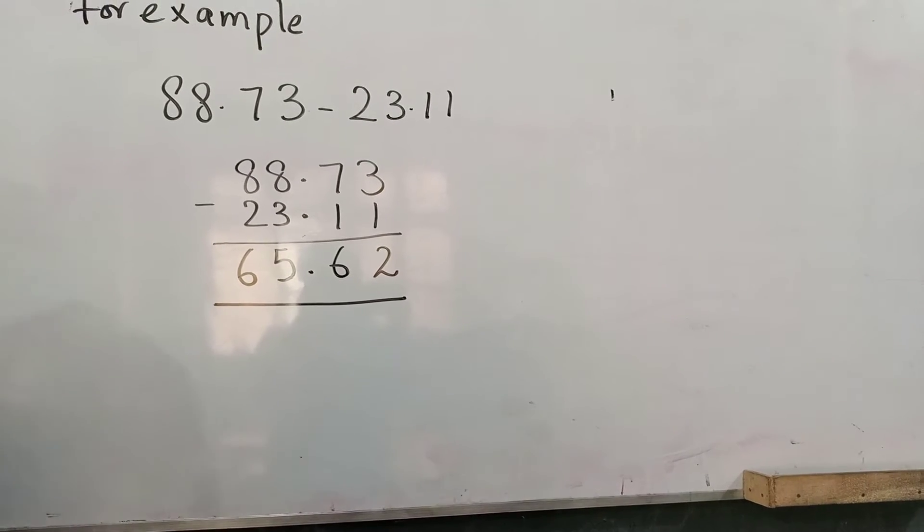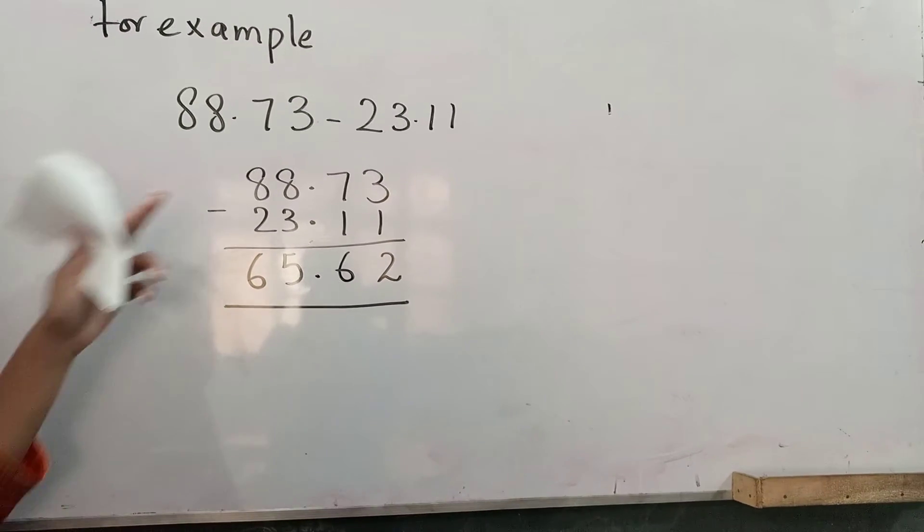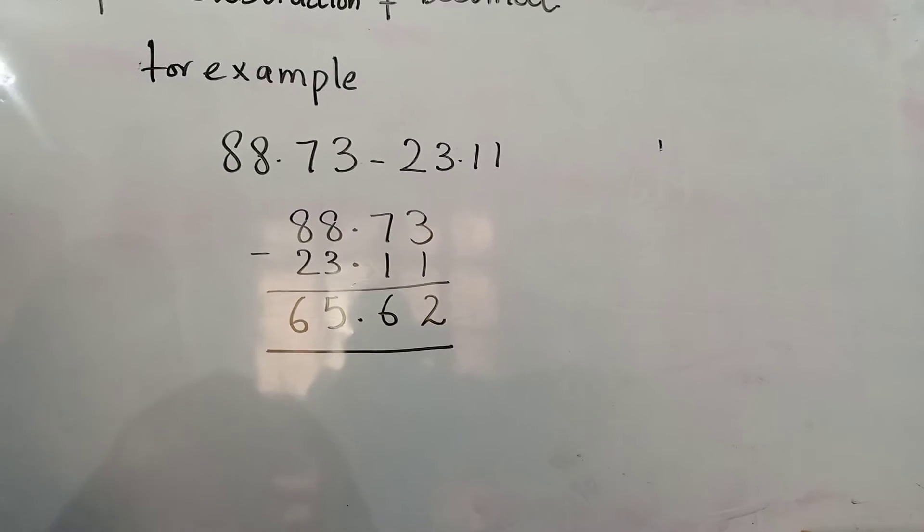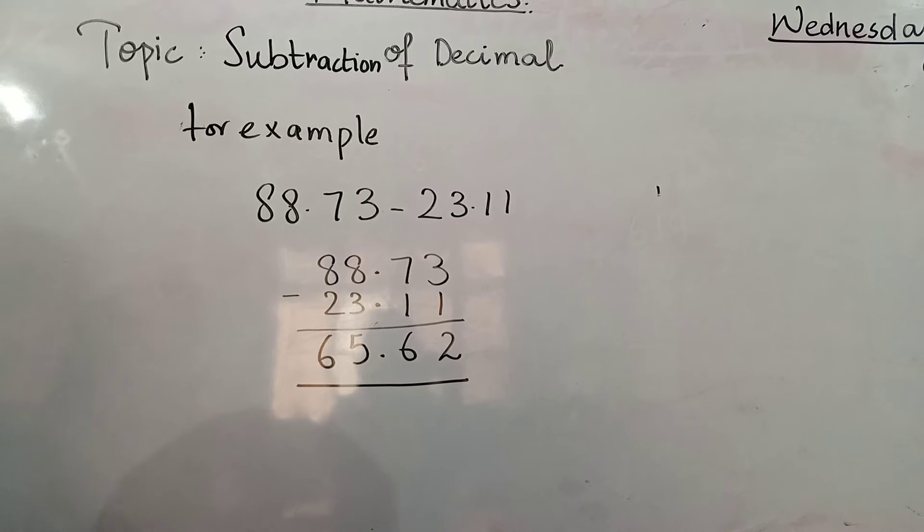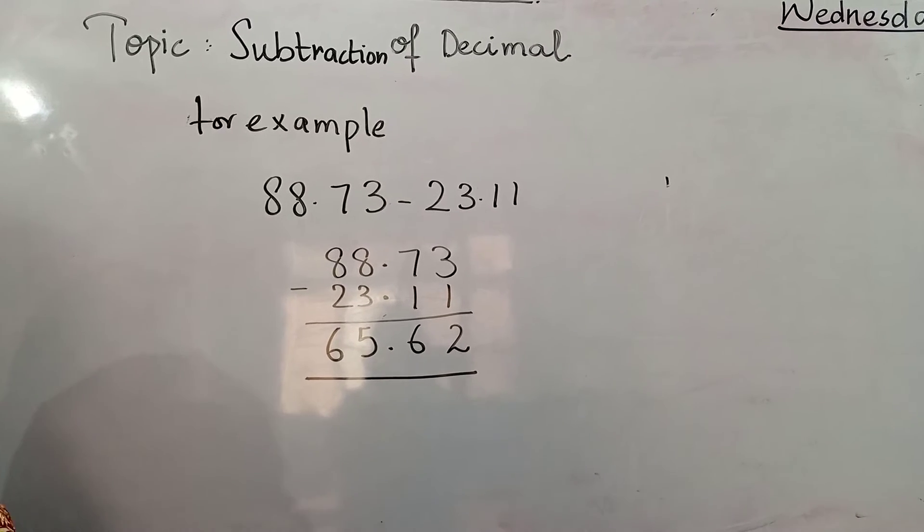Your answer will be correct when you write the point below point. Meaning, you have to write this vertically exactly correct, in such a way that point is below point. If you do it like this, your answer will be absolutely correct.